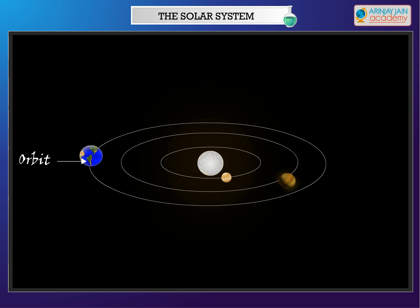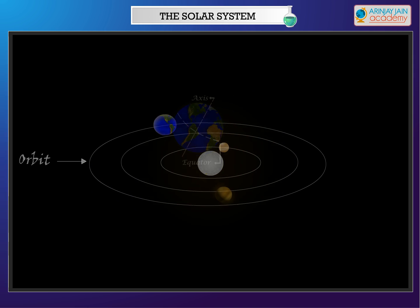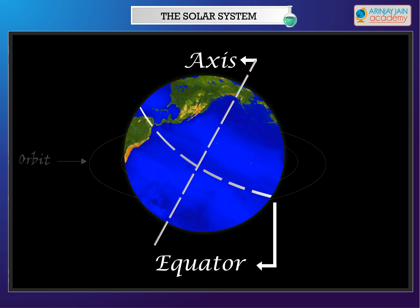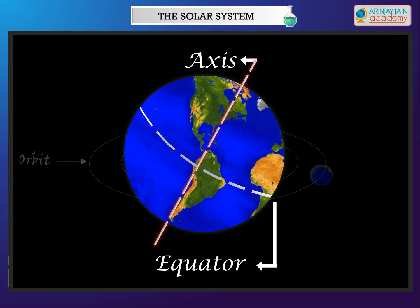This duration is referred to as a year. The tilted axis of the Earth and its revolution around the sun causes the formation of seasons.